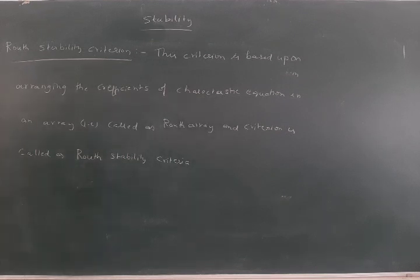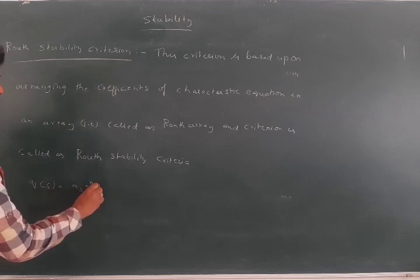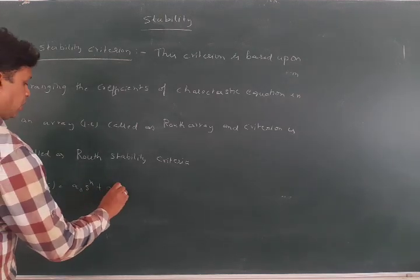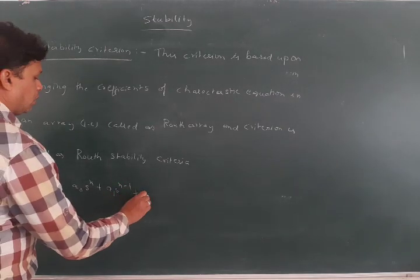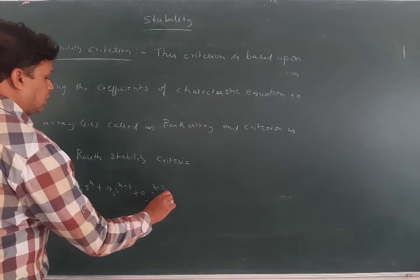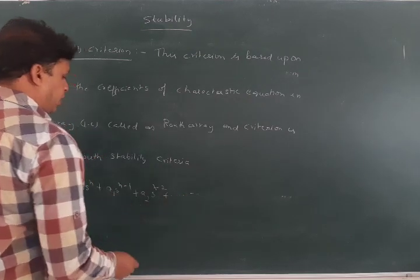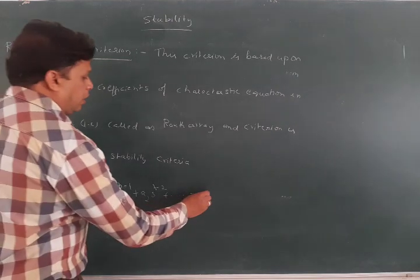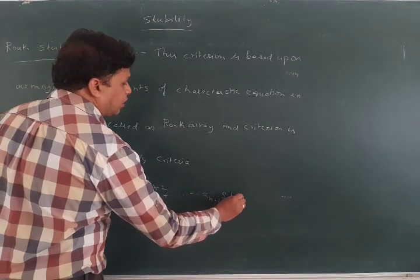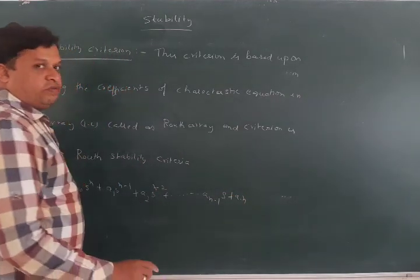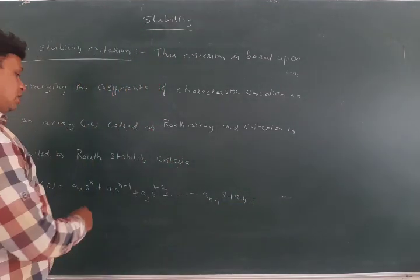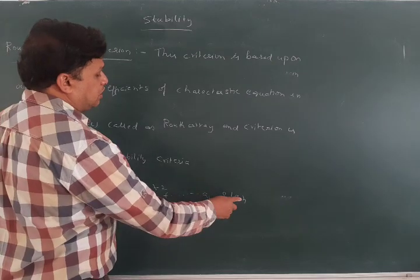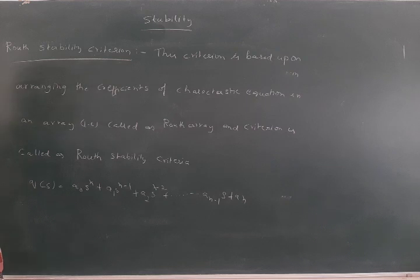We write the characteristic equation Q(s) as: A0·s^n + A1·s^(n-1) + A2·s^(n-2) + ... + A(n-1)·s + An = 0. Now we write this polynomial and arrange the coefficients to form the Routh array.